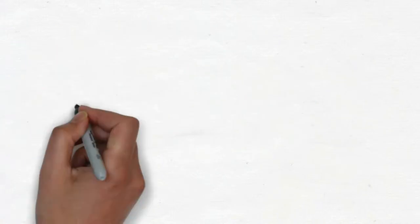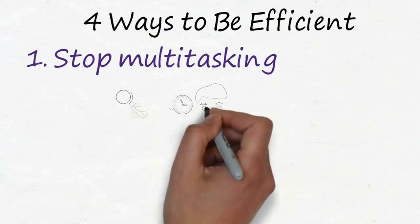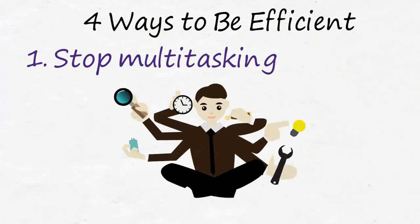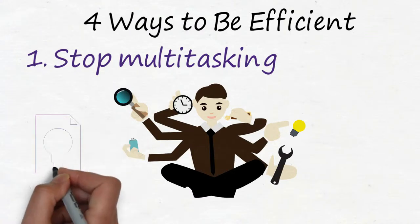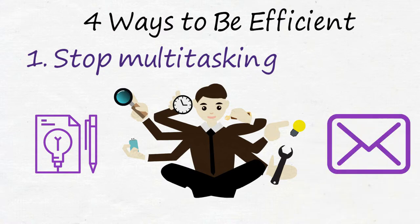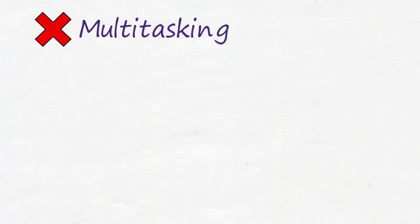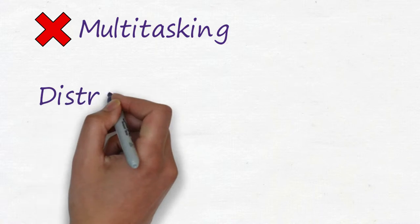There are four ways to be efficient. Number one, stop multitasking. Multitasking will keep you busy. People feel that they are doing different tasks at the same time. They are writing proposals while they are replying to emails or messages. They are very busy and feel good about this condition because they think that they are not wasting their time. However, if you want to be efficient, you should avoid multitasking.